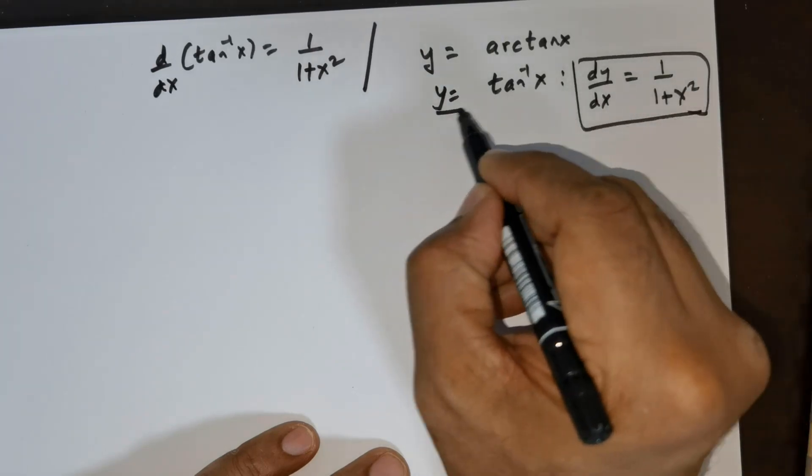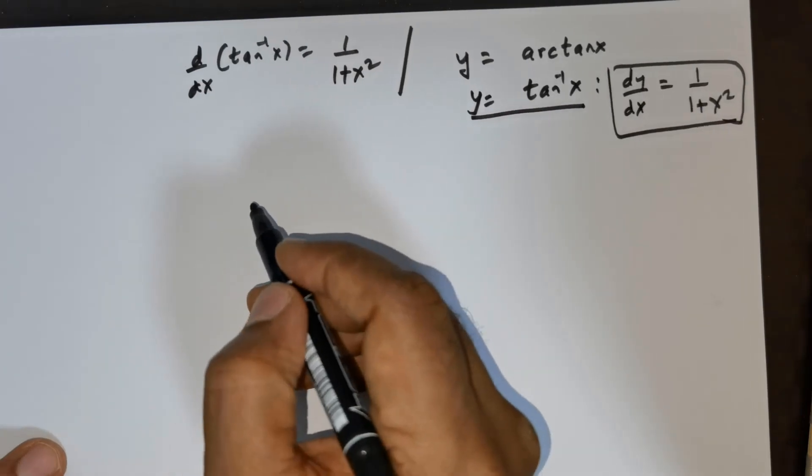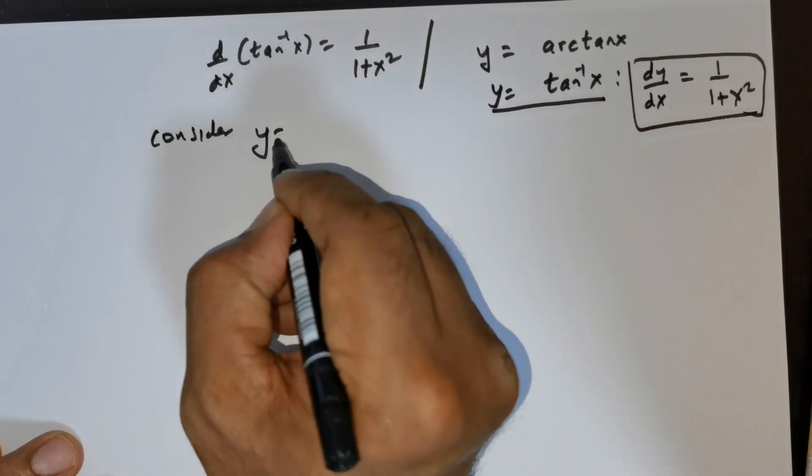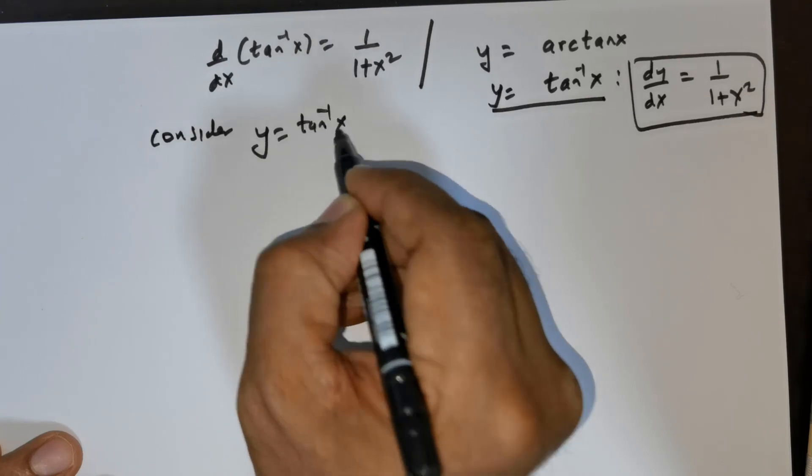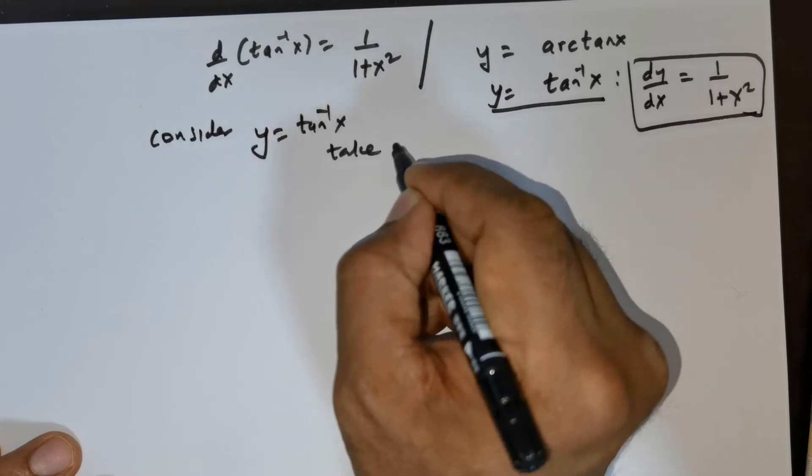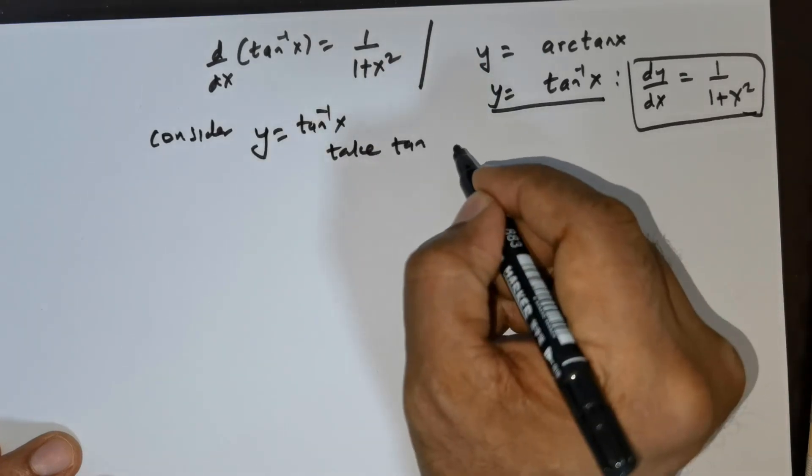Now this is the question given. What I wish to do is I would like to consider y to be equal to tan inverse of x. Now I will take tan on both sides.